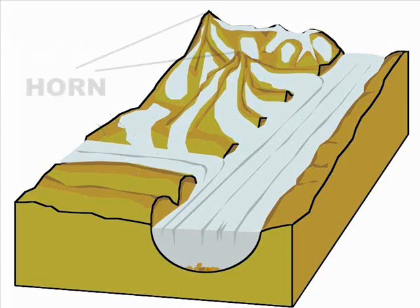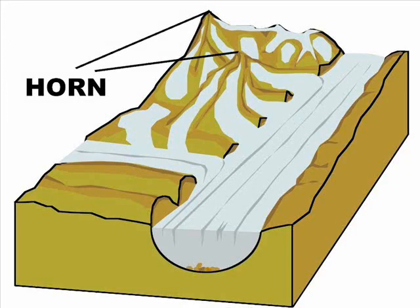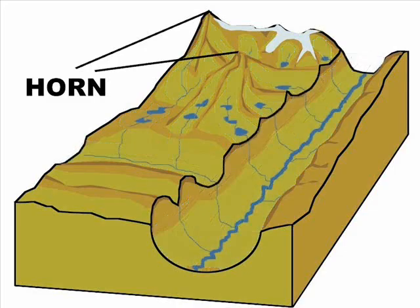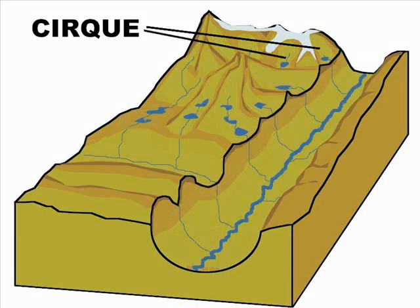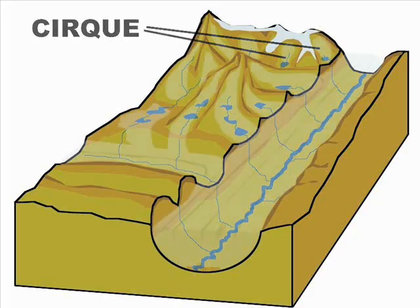Horn. The peaks associated with glaciers. Horns are sharp after years of glacial erosion. Cirque. At the peak of the mountain, the valley in the snow accumulation area of the glacier is enlarged and hollowed out by glaciers, producing a rounded cirque valley.